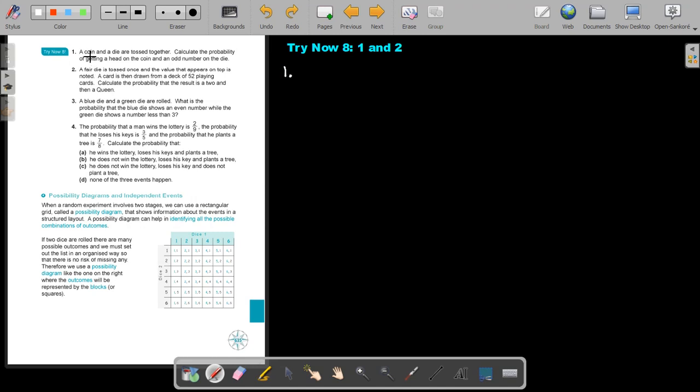Okay, let's start. A coin, again a coin, and a die are tossed together. Calculate the probability of getting a head on the coin. So probability, this is my coin. Let's write, this is my coin.